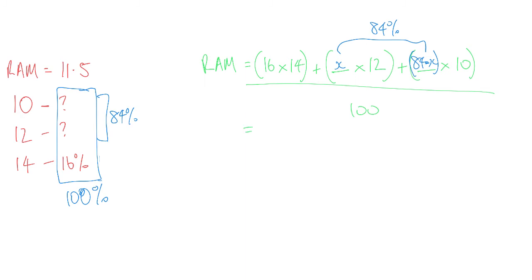So what you're doing, you're doing 16 times 14, which is 224, plus, and then this is 12x because x times 12 is 12x. And then this one here, you have to multiply everything inside the brackets by everything outside the brackets. So effectively it's 840 subtract, because there is that negative value there, subtract 10x, all over 100 is equal to 11.5.